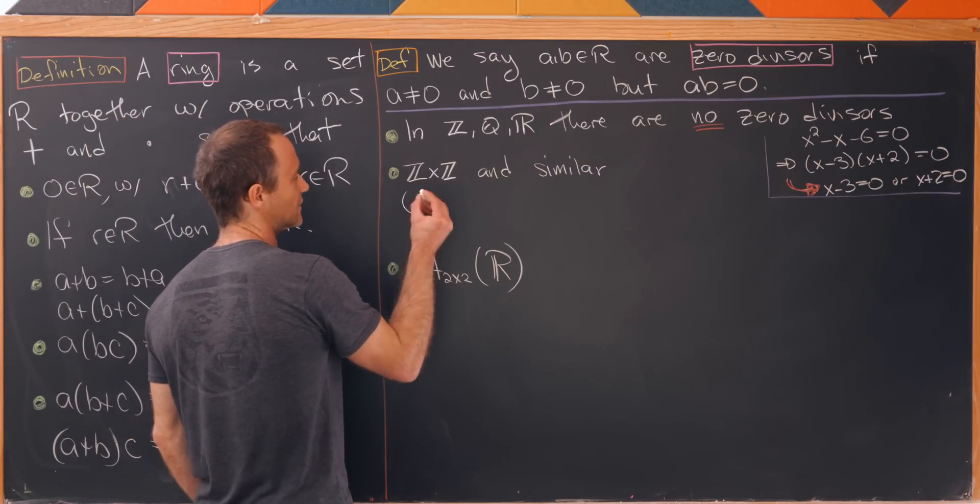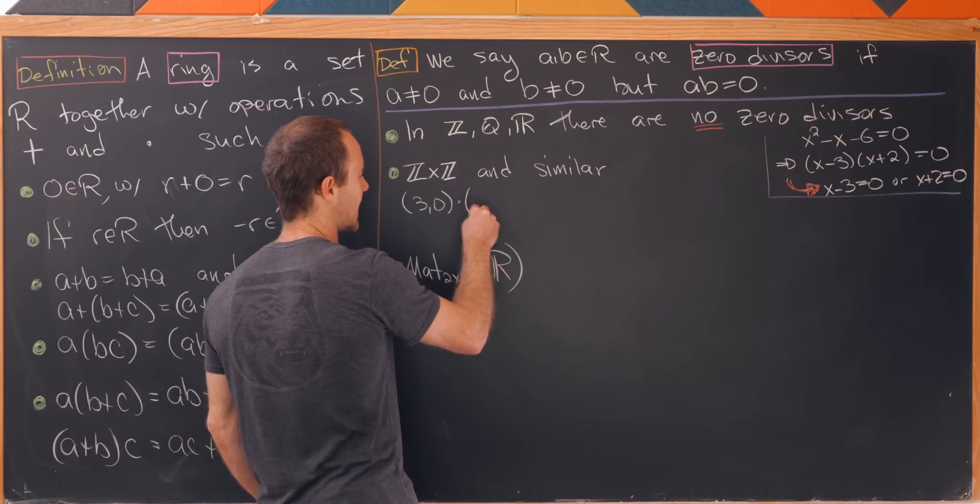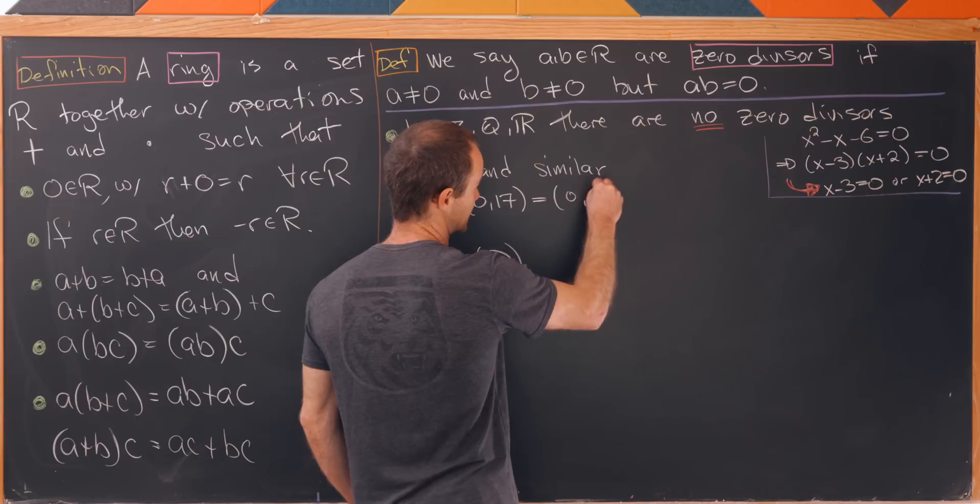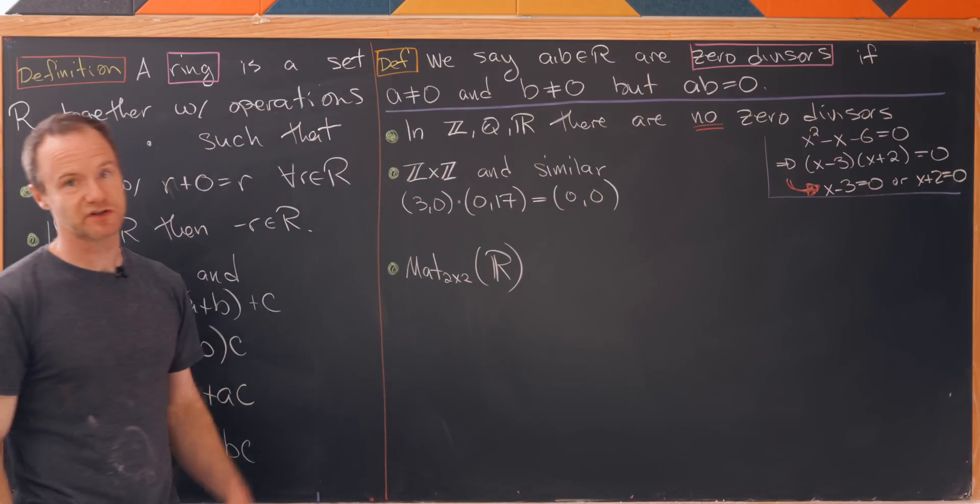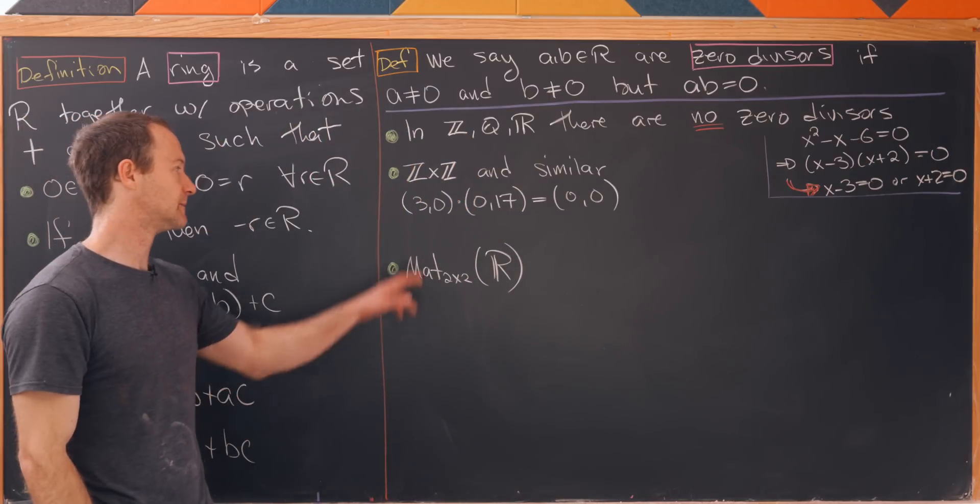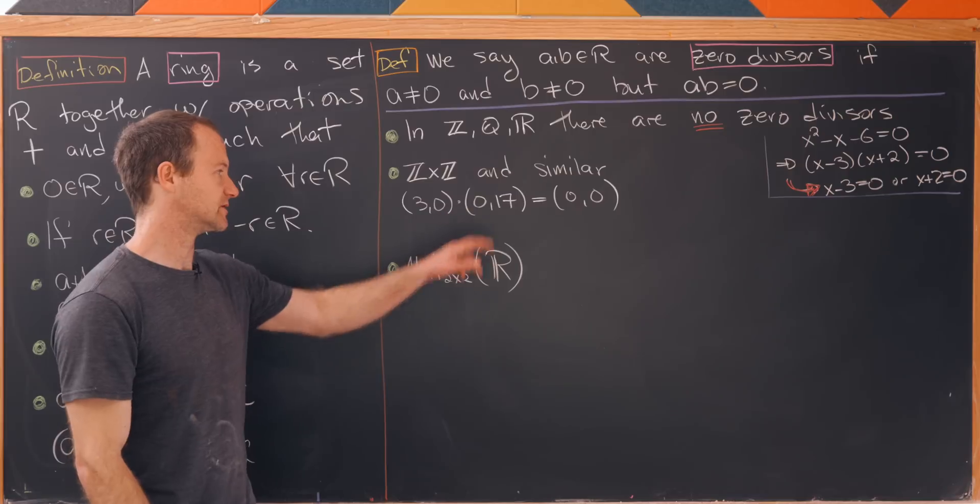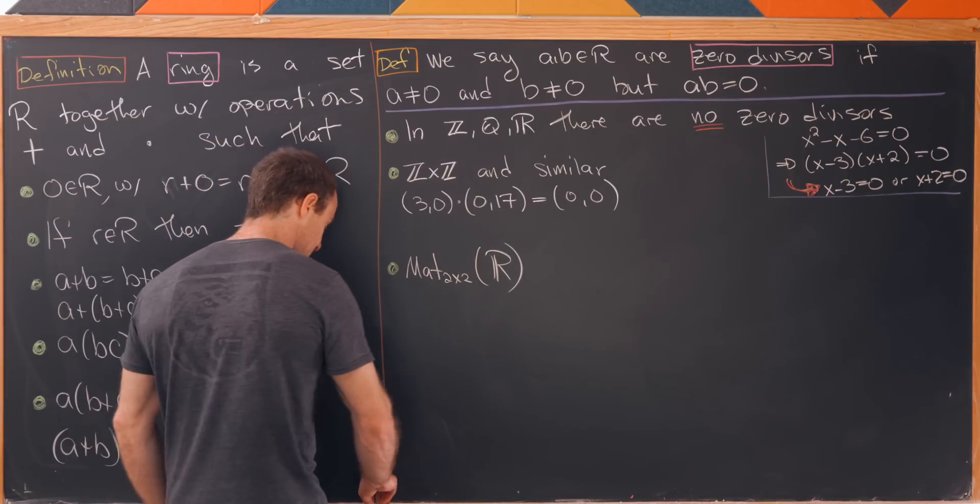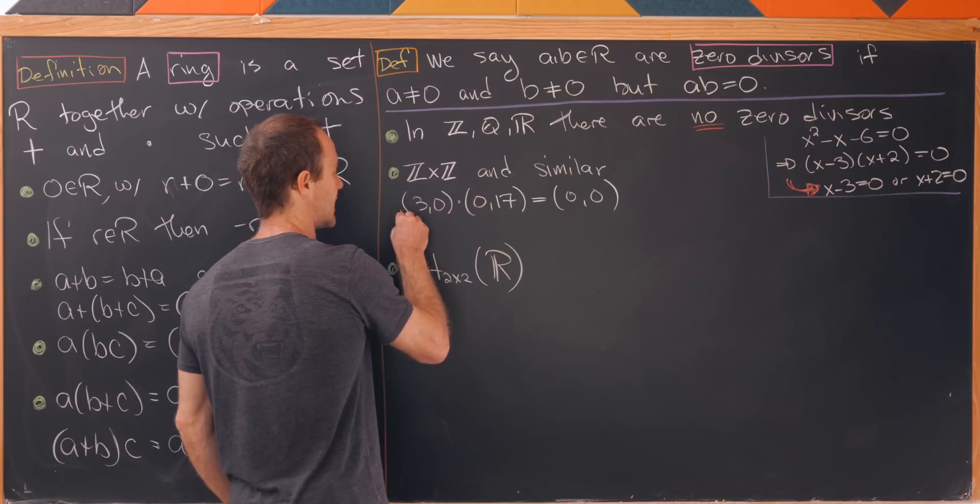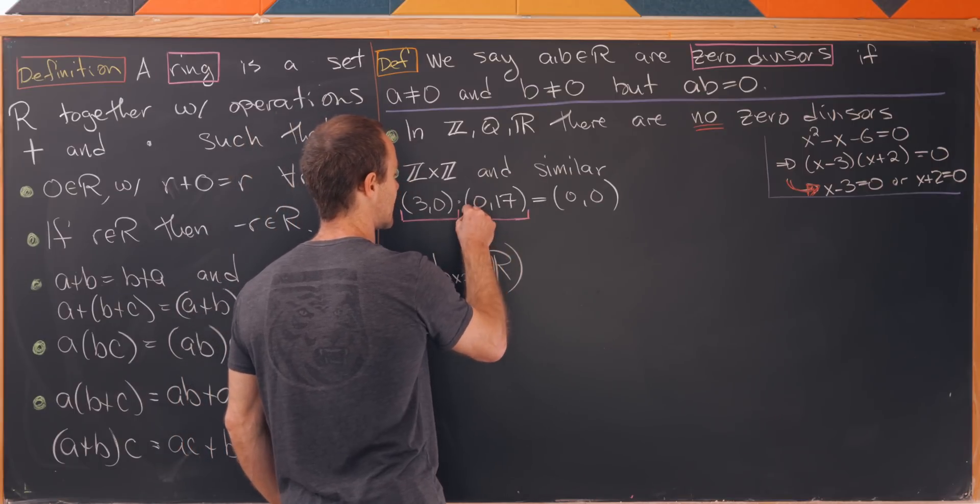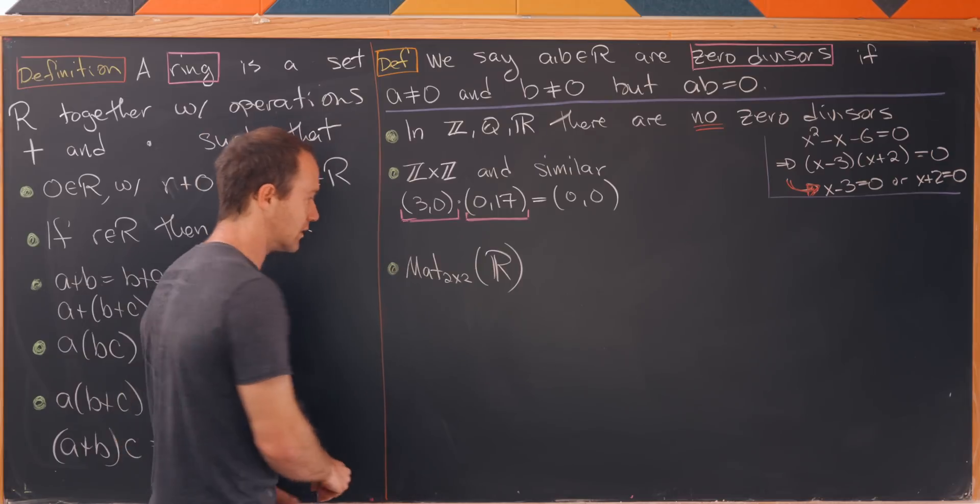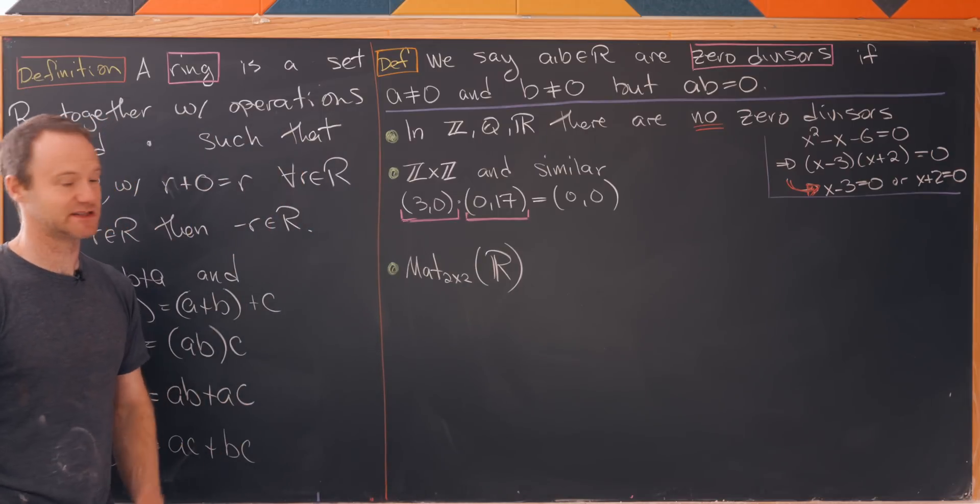So let's notice something like (3, 0) times (0, 17) is (0, 0). Again because the multiplication is component wise. You get 3 times 0 and 0 times 17. And this tells us that these two things that I'm underlining in magenta are indeed zero divisors. That's because they are not zero but their product is zero.